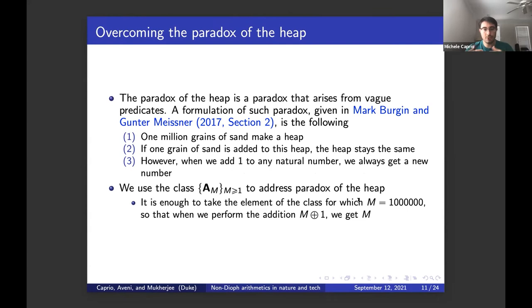Now, this is the main portion of my presentation. Why do we need to introduce this kind of class of non-Diophantine arithmetic? Because they overcome the paradox of the heap, which I'm going to talk about in a second, and also because they can be used to describe natural and tech phenomena for which usual Diophantine arithmetic may fail. The paradox of the heap is a paradox that arises from vague predicates, in particular, the vagueness of the word heap. The formulation of such paradox given by Professor Bergin and Gunther Meissner in their 2017 paper is: one million grains of sand make a heap. If one grain of sand is added to this heap, the heap stays the same.